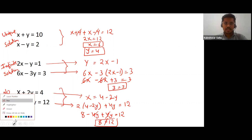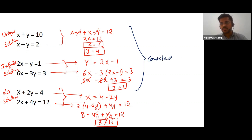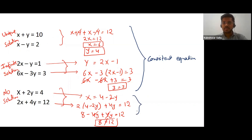So these are the three sets of equations with three different types of solutions. The first two pairs are known as consistent equations because they have at least one solution. But the last pair, since it does not have any solution, is known as an inconsistent equation.